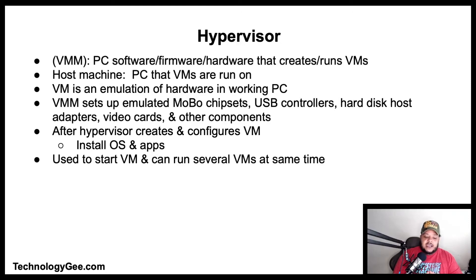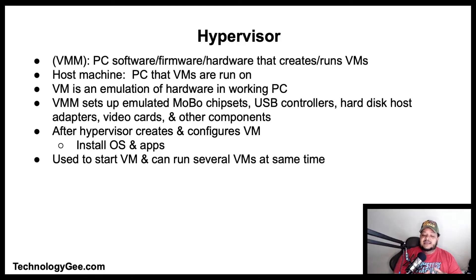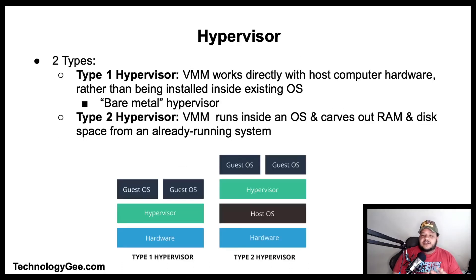After a hypervisor creates and configures a virtual machine, you install the operating system and apps desired into the VM to have a working emulated computer. The hypervisor is used to start the virtual machine, and depending on the RAM, processor speed, and available hard disk space in the physical computer, the hypervisor can run several VMs at the same time.